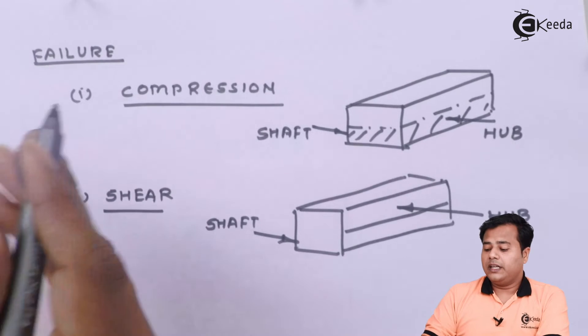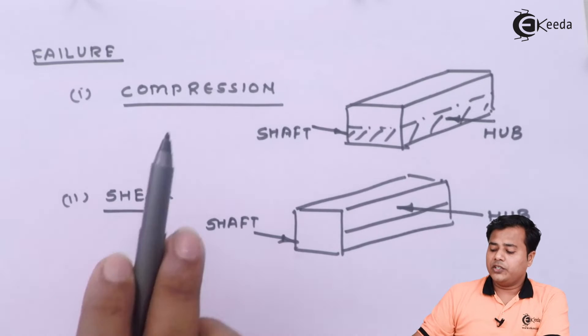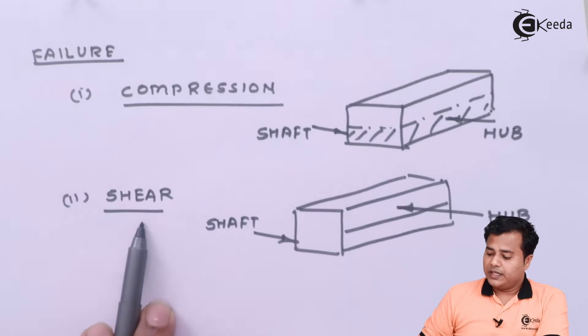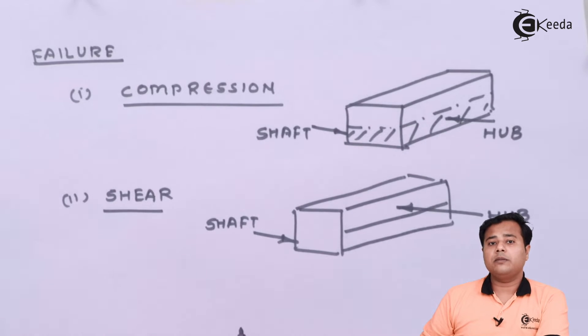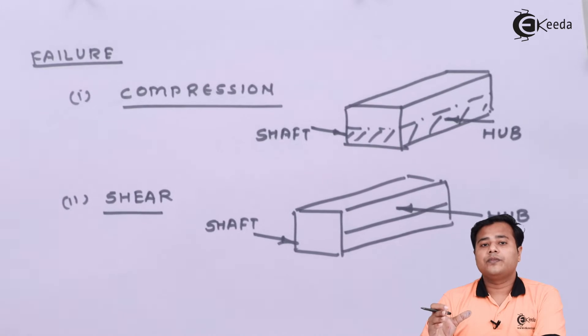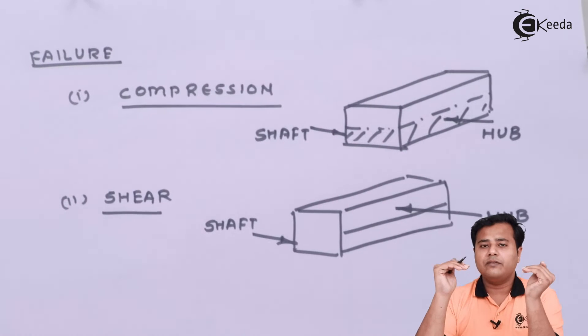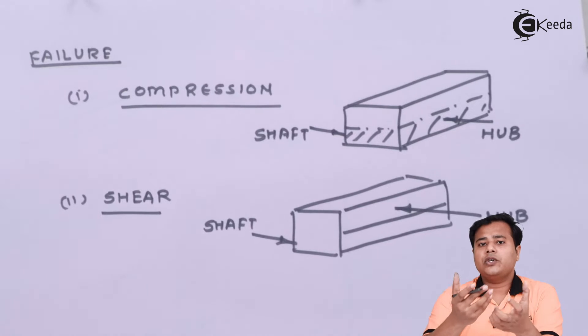Let us look at the failure. There are basically two ways in which a key can fail: it can fail in compression or it can fail in shear. When it comes to compression, you think about the part which is embossed in between the groove. In that case, if the pressure is coming from both the sides, it will undergo compression. It is never the tension and that's why it may fail in compression or crushing.